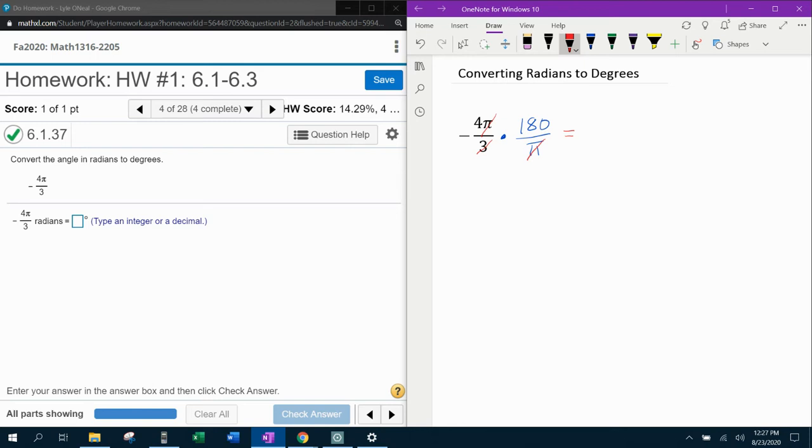Three is going to go into 180 sixty times. Three times 60, 180. And then if I multiply straight across, four times 60 is 240. So our final answer is going to be negative 240 degrees.